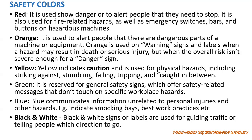Yellow is for general caution — you've seen it many times — used for physical hazards including striking against objects, stumbling, falling, tripping, and slipping. Green is for general safety signs; it provides safety-related information for certain areas that could be hazardous, telling you what precautions you need to follow. Blue is used to communicate information that is not directly related to safety or personal injuries — for instance, it may show where the smoking bins are or display best work practices.